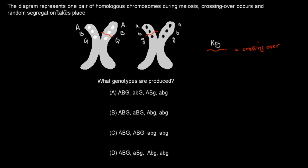Next question is: The diagram represents one pair of homologous chromosomes during meiosis. Crossing over occurs and random segregation takes place. These are chromosomes Capital A Capital B Capital G, Capital A Capital B Capital G, Small B AB and G. And a key, so this here, the squiggly lines means crossing over. So crossing over occurs here. What genotypes are produced? And these ones are the ones which are on offer. So when you are ready, pause the video and attempt the question.